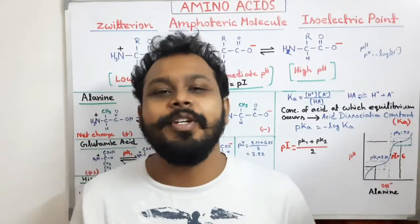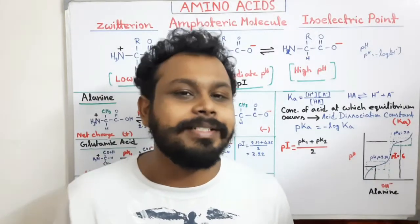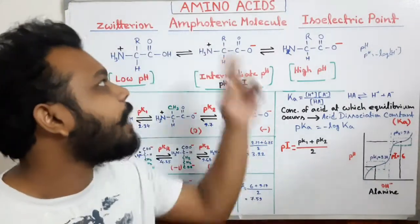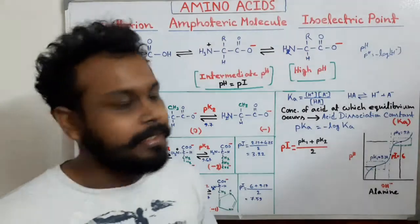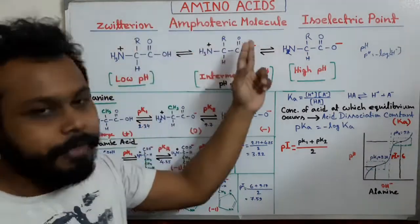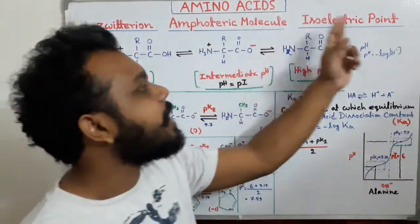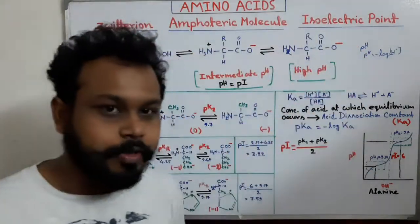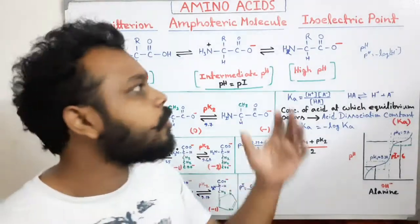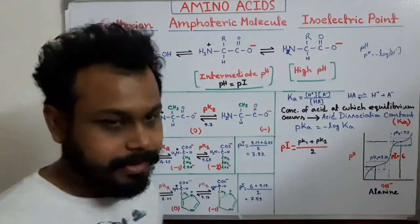Hello friends. Today in this video we are going to discuss about some characteristics of amino acid: zwitterion, amphoteric molecule, and isoelectric point.